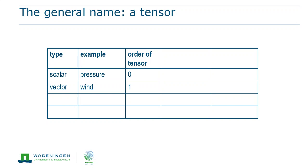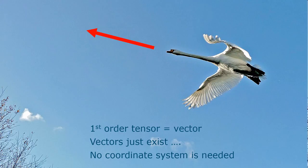But before we get there, let's have a closer look at what a vector actually is. For that, it is good to keep in mind that a vector is only defined by its magnitude and direction. We do not need a coordinate system for a vector to exist. It's like the same way as this swan that can simply fly in a certain direction with a certain speed. No coordinate system needed.